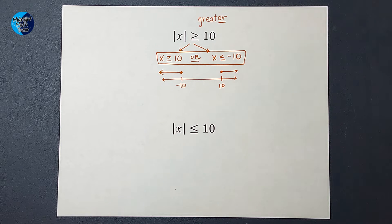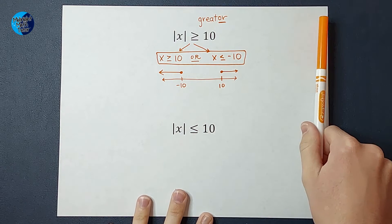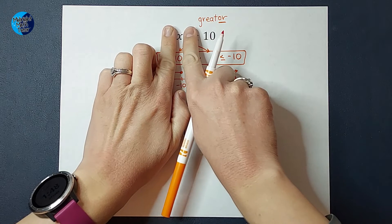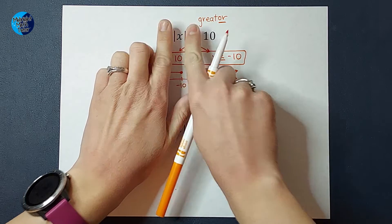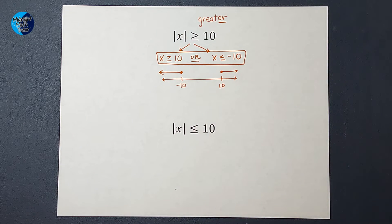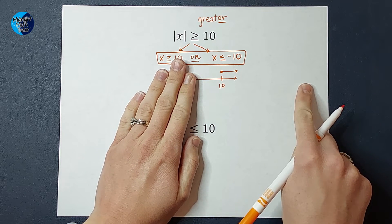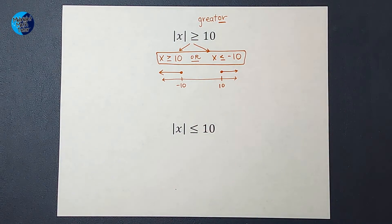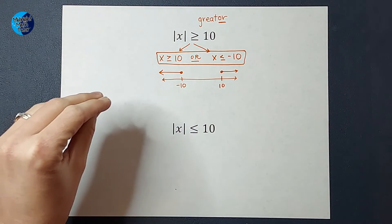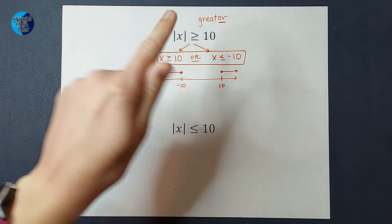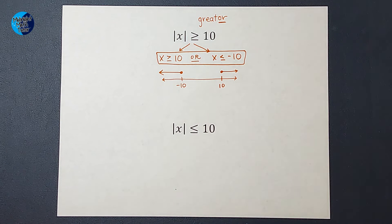So the reason we have that or is we have all these positive numbers. If the absolute value bars weren't there, my answer would just be X is greater than or equal to 10. But because the absolute value bars are there, we have to consider these negative answers that turn to positive inside the absolute value bars. So that's why we have the or and why we split it off into two.